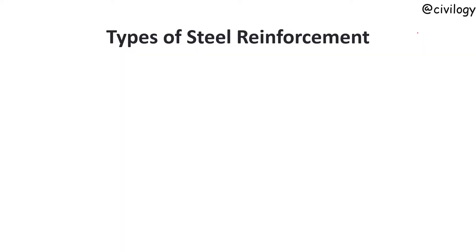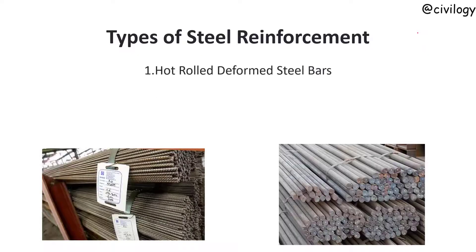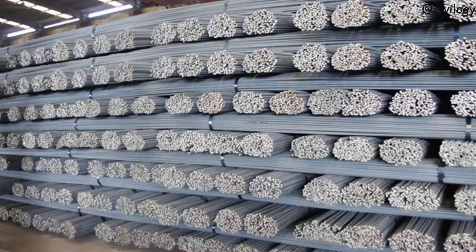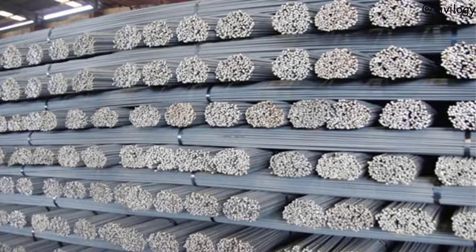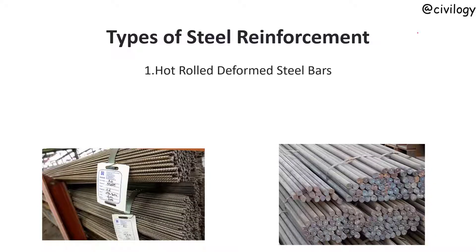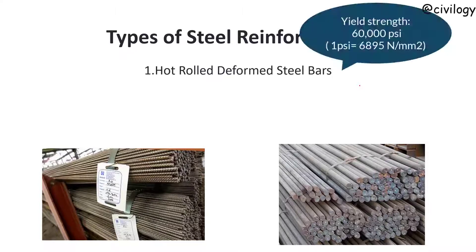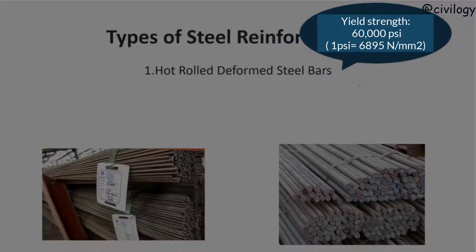Next, types of steel reinforcement. First, hot rolled deformed steel bars — these are the most commonly used steel reinforcement for RCC structures. As the name says, the hot rolling process leaves certain deformations on the surface in the form of ribs, as you can see in the picture. These ribs help form a bond with the concrete. The typical yield strength of hot rolled deformed bars is 60,000 psi.